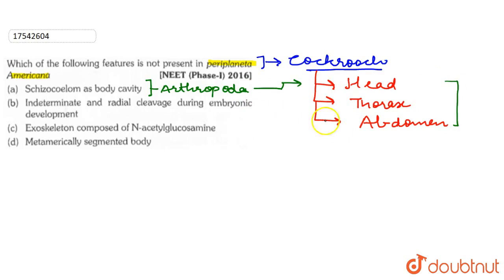Because here we include different body parts which have different functions. The cockroach performs different developmental activities. The alimentary regions and digestion tract both play an important role. So the first statement is the correct one. The second one is intermediate and radial cleavage during embryonic development.